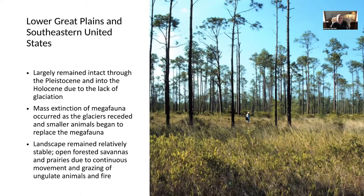The lower Great Plains and the southeastern United States remained largely intact through the Pleistocene and into the Holocene. There was a mass extinction of the megafauna as the glaciers receded and smaller animals began to replace them, but the landscape in the lower Great Plains and southeastern U.S. remained relatively stable.